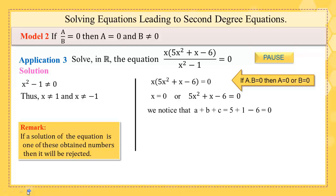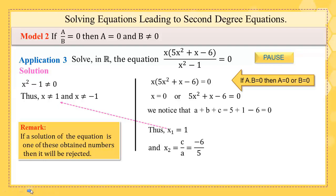So x₁ = 1 and x₂ = c/a = -6/5. Note that x₁ = 1 equals the excluded value from the denominator condition, so x₁ = 1 is rejected. As for x₂ = -6/5, it is accepted because it is not equal to 1 or -1. Finally, the accepted solutions are x = 0 and x = -6/5.